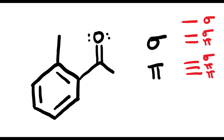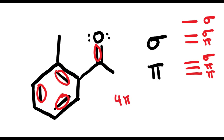So when we look at this molecule and we're counting the number of pi bonds, we've got a pi bond, pi bond, pi bond, and then another pi bond, for a total of four pi bonds.